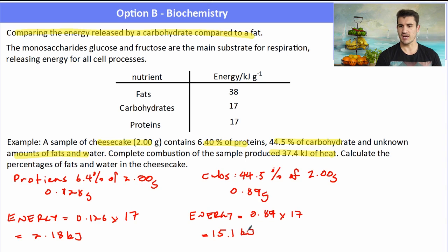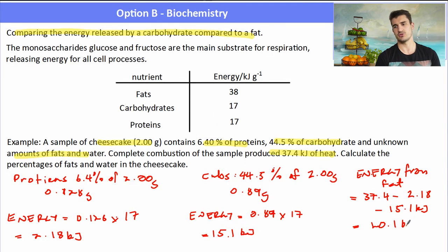So where did the rest of the energy come from? Well, the rest or the remaining amount of energy must have come from the fats. So we need to just do a takeaway here to work out how much energy was produced from the fat. So they told us in the question that we have 37.4 kilojoules of energy released. We worked out the energy from the proteins. We worked out the energy from the carbs. So we're left with 20.1 kilojoules, which must be produced from the fats. So how many grams of fat must have been in that sample? Then what we need to do is get our energy and divide it by our energy per gram to give us the amount in grams, which is 0.52 grams.